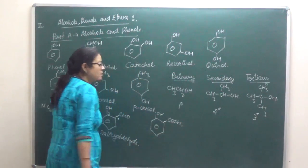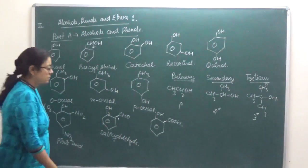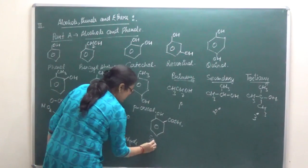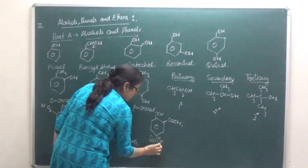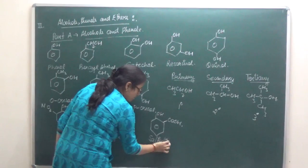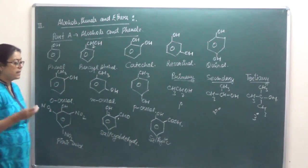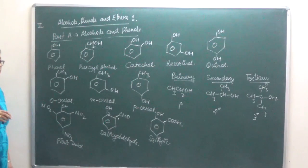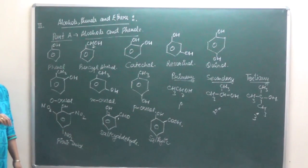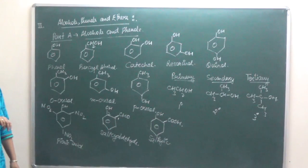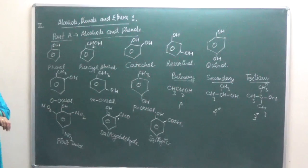If here we substitute with COOH group, this becomes salicylic acid. IUPAC name is 2-hydroxy benzoic acid. So these are some important things you need to remember.